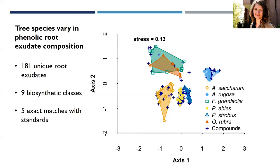With this method I identified 181 unique root exudates belonging to nine different biosynthetic classes, but out of these 181 exudates I only found five matches with the standards I used — demonstrating the big diversity of chemicals we haven't identified yet. However, for most chemicals I was able to assign a biosynthetic class. I then wanted to answer how unique these phenolic profiles were among species — how species-specific they were.